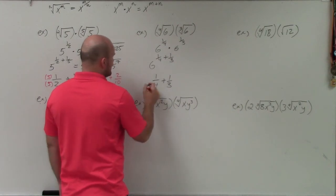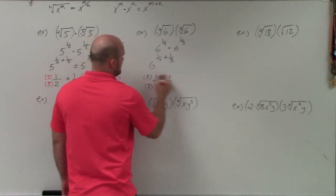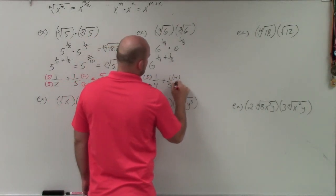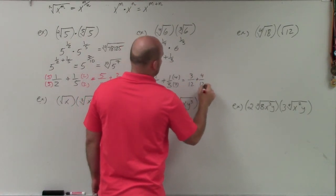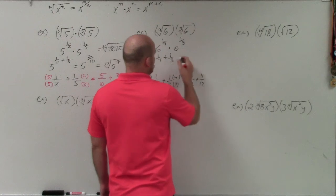When adding 1 4th plus 1 3rd, again, you're going to want to get common denominators. So I'll multiply by 3 over 3, 4 over 4. That equals 3 over 12 plus 4 over 12, which is going to equal 7 over 12.